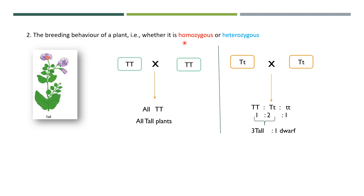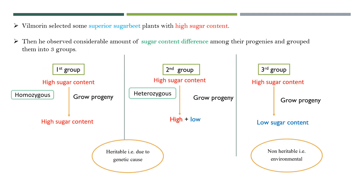This you can understand easily with a checkerboard, where you can see how three tall and one dwarf plant are formed. Now let's take an example and understand what Villimorin did in his experiment. He selected some superior sugar beet plants with high sugar content, then he grew their progenies and observed a considerable amount of sugar content difference. To explain this, he grouped his selected superior sugar beet plants into three groups. In the first group, all progenies were with high sugar content. In the second group, some progenies were with high sugar content and some were with low sugar content.